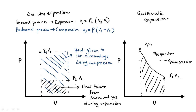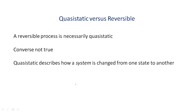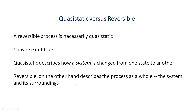All reversible processes are necessarily quasi-static. However, the converse is not true: all quasi-static processes need not be reversible. For example, a system could be undergoing a quasi-static process but exchanging energy with another system which is undergoing a non-quasi-static process — then the process as a whole is not reversible. The key point is that quasi-static describes how a system is changed from one state to another, while reversible describes the process as a whole, including the system and its surroundings. In thermodynamics discussions, quasi-static processes are usually referred to as reversible, and we will do the same while being aware of the underlying assumptions and subtleties.